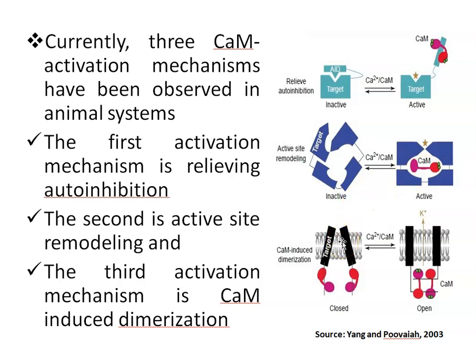The third mechanism is calmodulin-induced dimerization. Here, two calmodulin molecules tightly interact with two potassium channel domains of the calcium-activated potassium channel. Upon calcium binding, the C-terminal EF-hands mediate tethering to the channel, and the N-terminal EF-hands are responsible for calcium-induced dimerization leading to channel gating — transitioning from a closed to an open state.